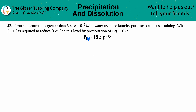Number 42: iron concentrations greater than 5.4×10⁻⁶ molarity in water used for laundry purposes can cause staining. What concentration of hydroxide ion (OH⁻) is required to reduce the iron concentration — Fe²⁺ — to this level by precipitation of Fe(OH)₂? So we're talking about precipitation.